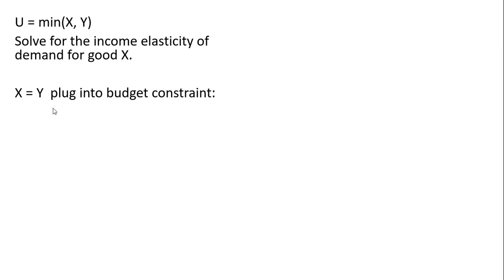So this consumer, when maximizing utility, will use equal amounts of good x and good y. So I'm just going to set what is in parentheses here equal to one another, so x equals y.